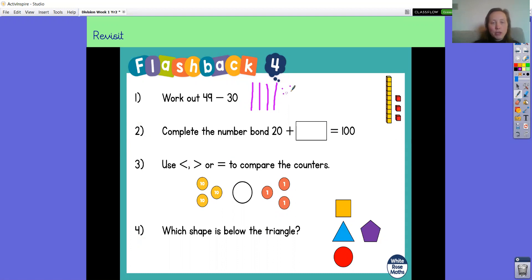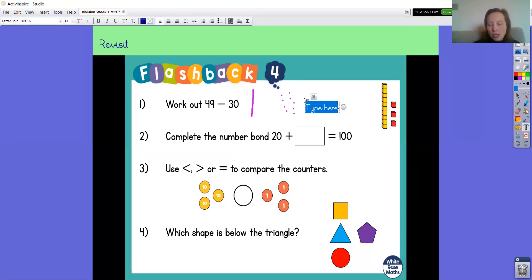49 is four tens and nine ones. Now let's have a look at the number 30. We have got three tens and no ones, so I don't need to take any ones away, but I need to take three tens. So taking away three tens leaves me with 19. 49 take away 30 is 19.